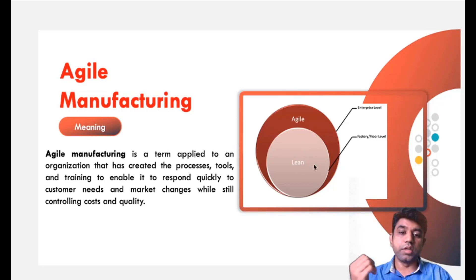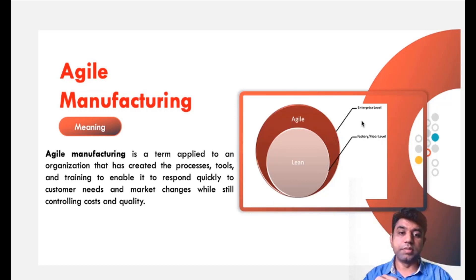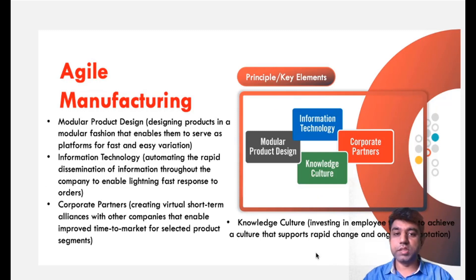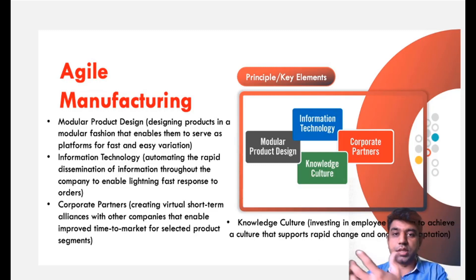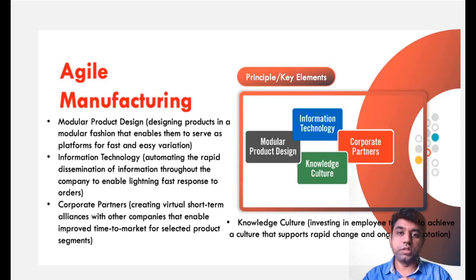When we discuss about lean manufacturing it is at the factory or floor level. But this agile manufacturing concept is at the enterprise level. So it is a giant change we need to make if you need to go for agile manufacturing. Now let us understand the basic fundamentals. If you want to have agile manufacturing — making changes as per the need of the customer — the first thing you need to do is about product design. The product design should be modular.